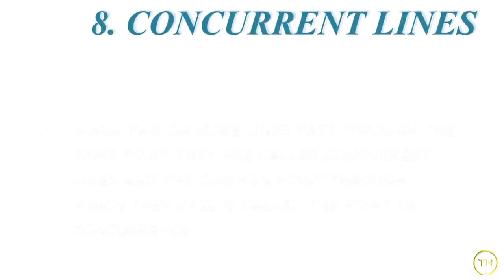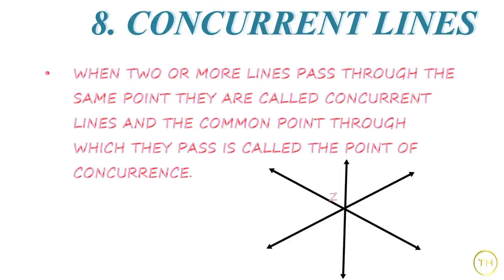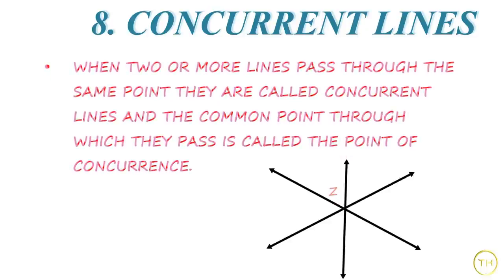Next, we learn about concurrent lines. When two or more lines pass through the same point, they are called concurrent lines. And the common point through which they pass is called the point of concurrence.